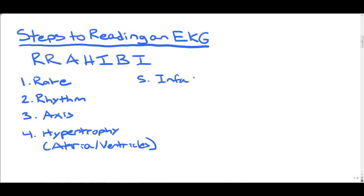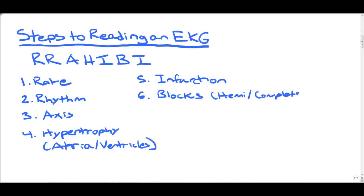The fifth step is any signs of infarction: ST elevations, ST depressions, T-wave inversions, new blocks. The sixth step is Bundle Branch Blocks, which can be split into Hemiblocks, Incomplete Blocks, and Complete Blocks — also very important for understanding heart physiology. Last, I look at Intervals and Segments: the waves, PR intervals, to determine how the conduction of the heart is going.